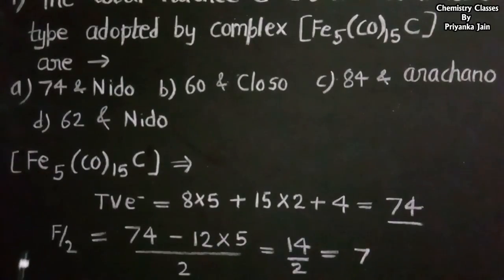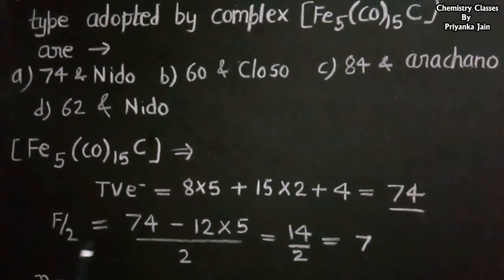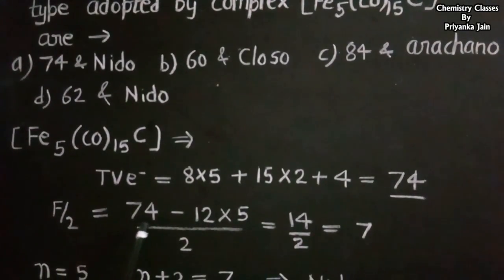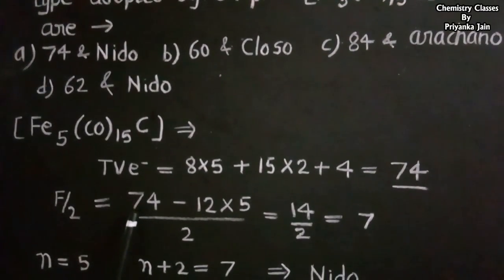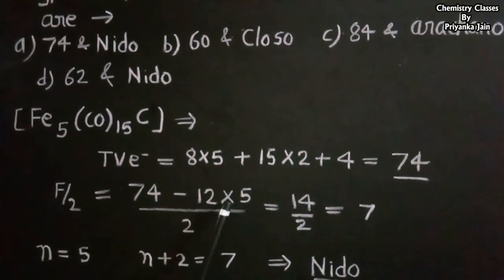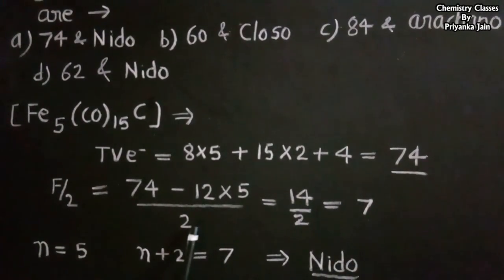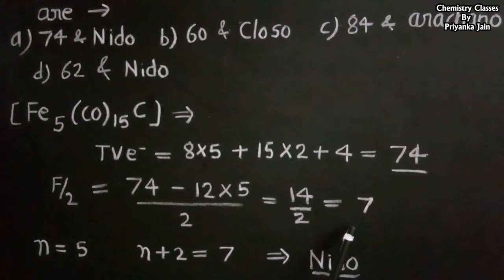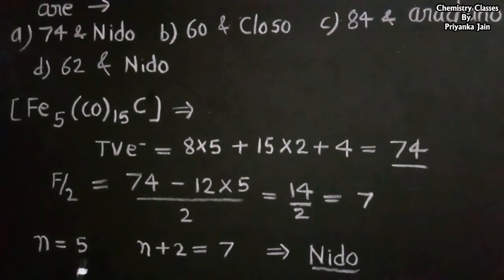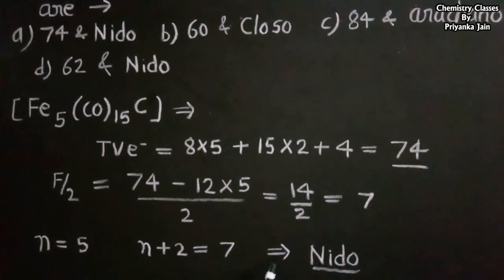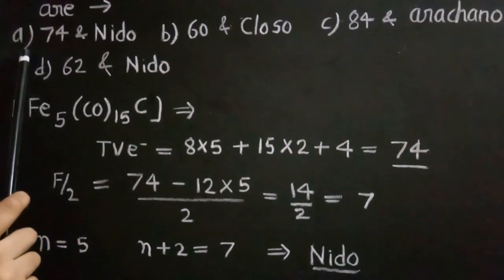For this transition metal cluster, SEP = (74 − 12×5) / 2 = 7 skeletal electron pairs. The number of vertices is 5 (the five iron atoms). Since 7 = n + 2, this is the nido group. So this compound has 74 valence electrons and a nido structure — option A is the correct answer.